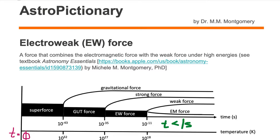The electroweak, or EW force, is a force that combines the electromagnetic force with the weak force under high energies.